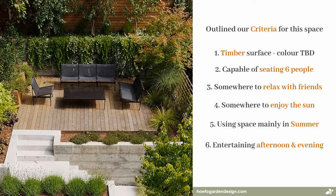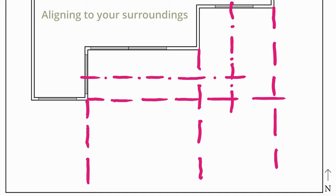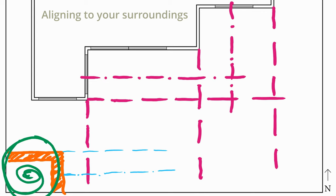With all that said, now we can start to look at the second principle — using our surroundings to position the space. There are two parts to this. One is aligning to either existing things like the house, trees, or buildings, or aligning to another element in your design. This is often known as the regulatory line, and basically means you follow an imaginary line from your house out into the landscape and align to it. Or you can align one part of your design to another, as the design is developed and worked on.